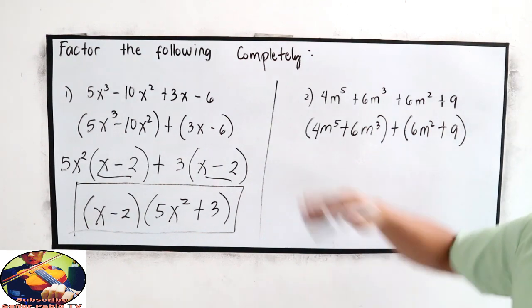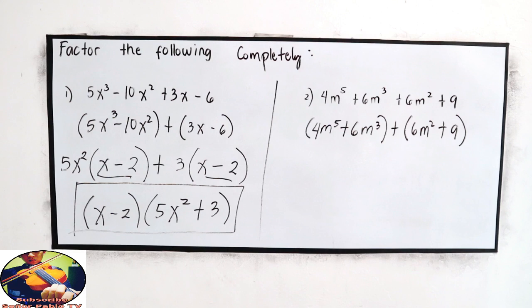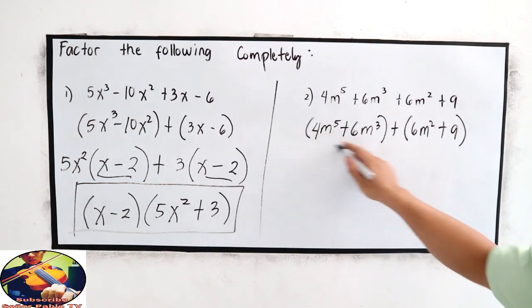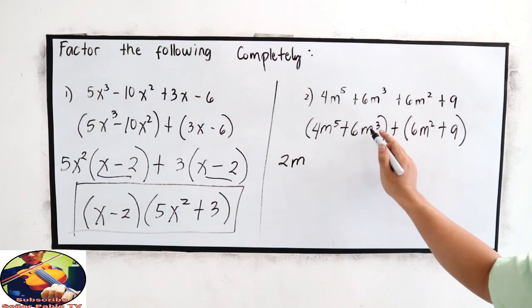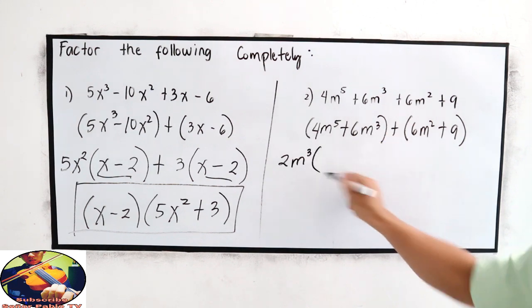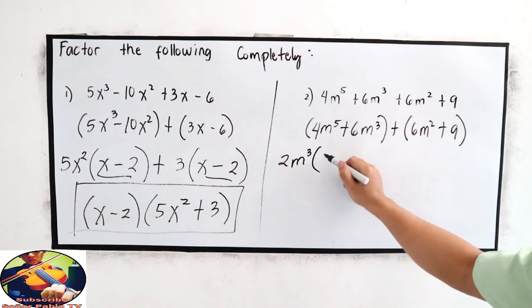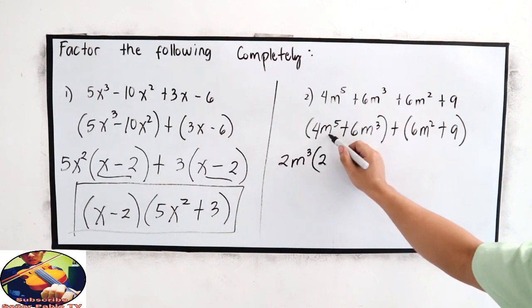For this expression, we have 2m cubed, that would be the lowest exponent of the variable. 4 divided by 2, that is 2. m raised to 5 divided by m cubed, m squared.